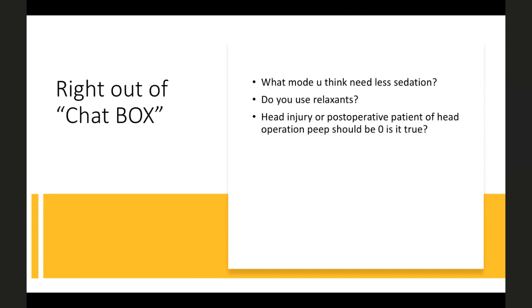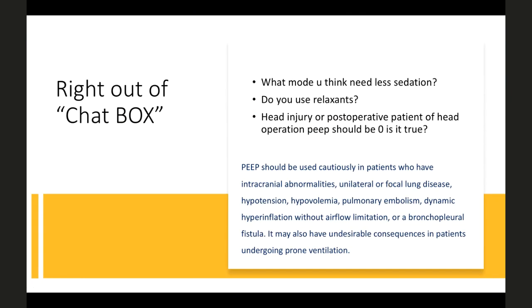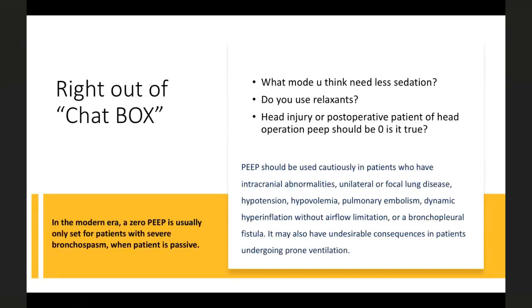PEEP should be used cautiously in patients with intracranial pathology, unilateral or focal lung disease, hypotension, hypovolemia, pulmonary embolism, dynamic hyperinflation without airflow limitation, or bronchopleural fistula. High PEEP can cause venous congestion and raised ICP, and may have undesirable effects during prone ventilation. In modern practice, zero PEEP is used only in passive, paralyzed patients with severe bronchospasm — otherwise, zero PEEP is rarely advocated.